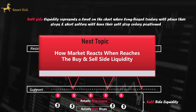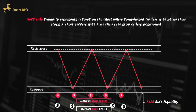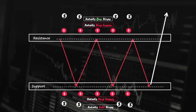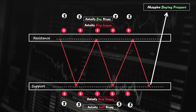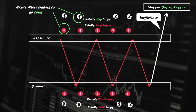Now let's see how the market reacts when it reaches buy-side and sell-side liquidity. Let's say the price is moving towards equal highs and retail traders are selling as the price reaches the resistance level, placing their stop-losses above it. If the price pushes upward and breaks through the resistance level, it not only triggers the stop-losses of retail traders who entered short positions, but also generates massive buying pressure as these short positions are covered. Additionally, it activates the buy-stops of retail traders looking to enter long positions after the breakout, resulting in a surge of buying pressure and creating inefficiencies at the top of the structure.